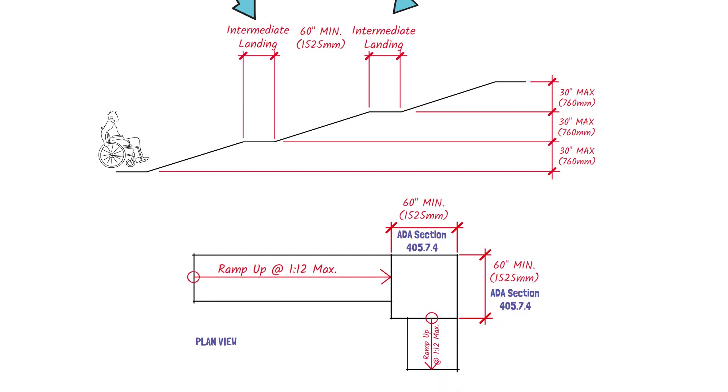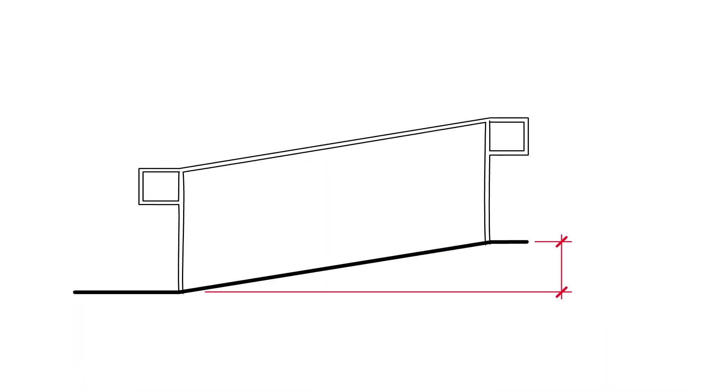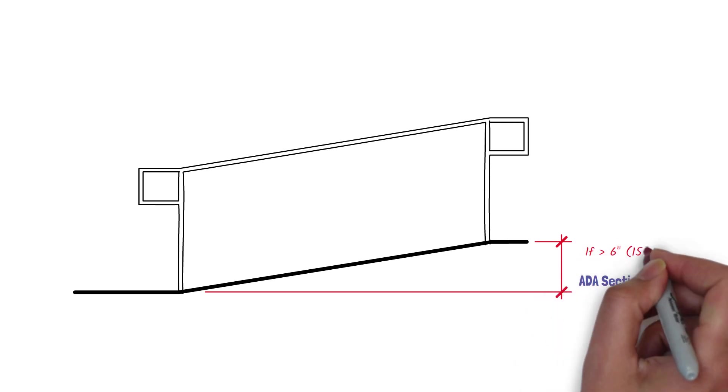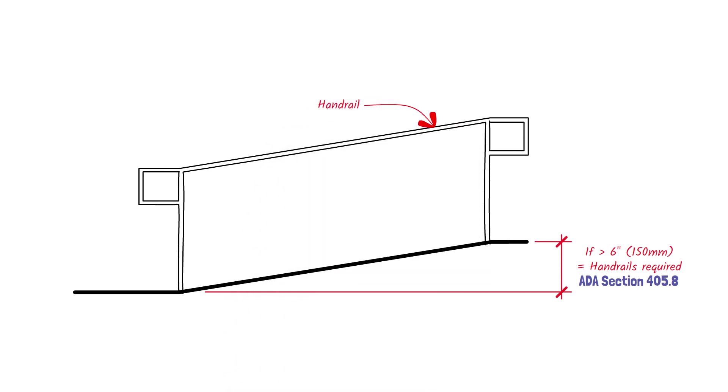What about handrails? Sometimes you see ramps that have them, and sometimes they don't. Why is that? Well, per ADA Section 405.8, if your ramp has a rise greater than 6 inches, you must have handrails. That's why you see some short ramps that do not go up greater than 6 inches that don't have handrails, such as curb ramps.